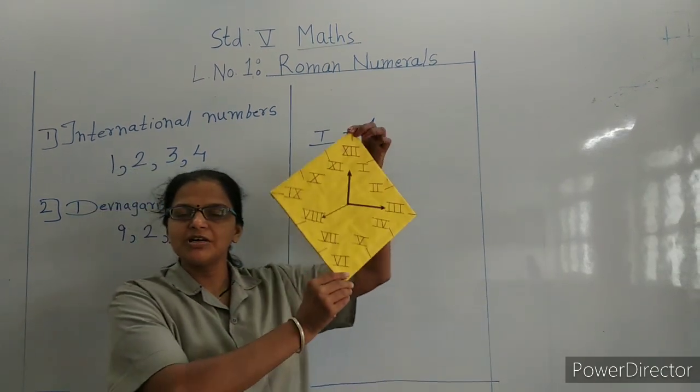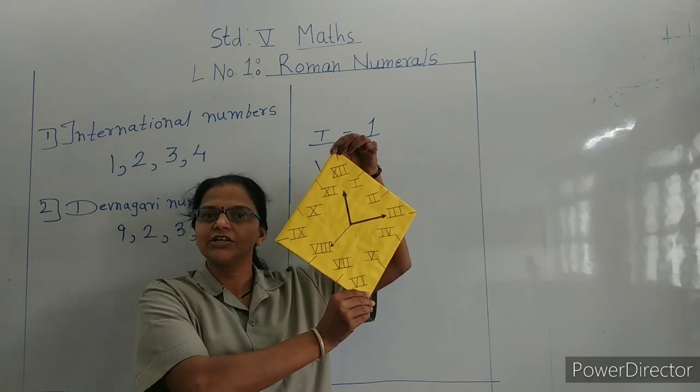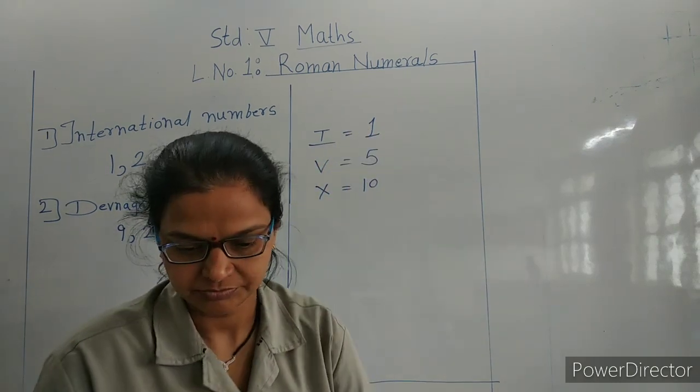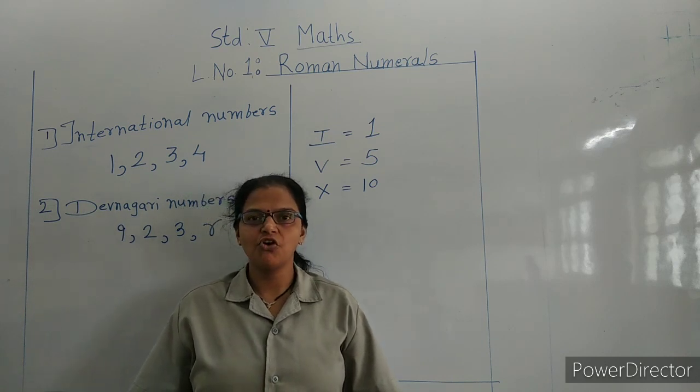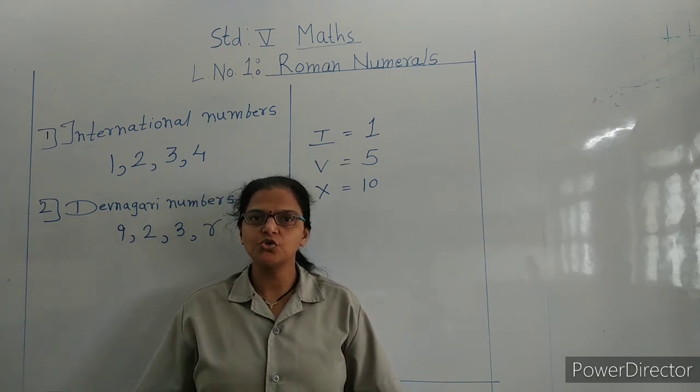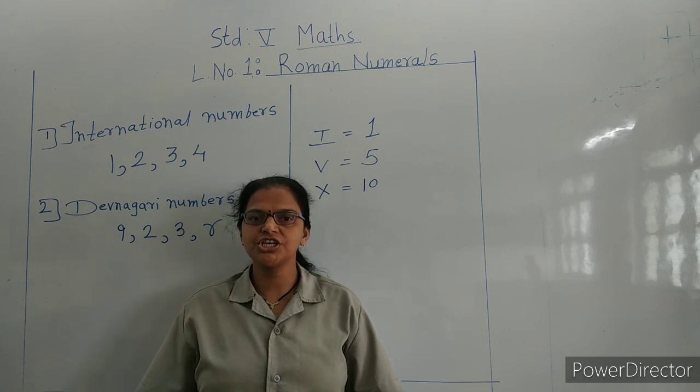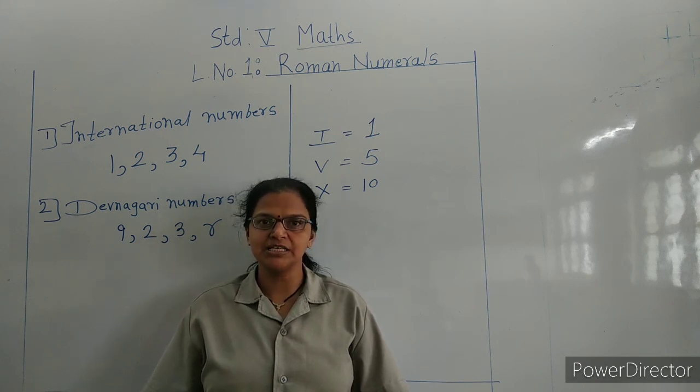Roman numerals are used in clocks. There is no symbol for 0. Also, the value of a symbol does not change with its place.